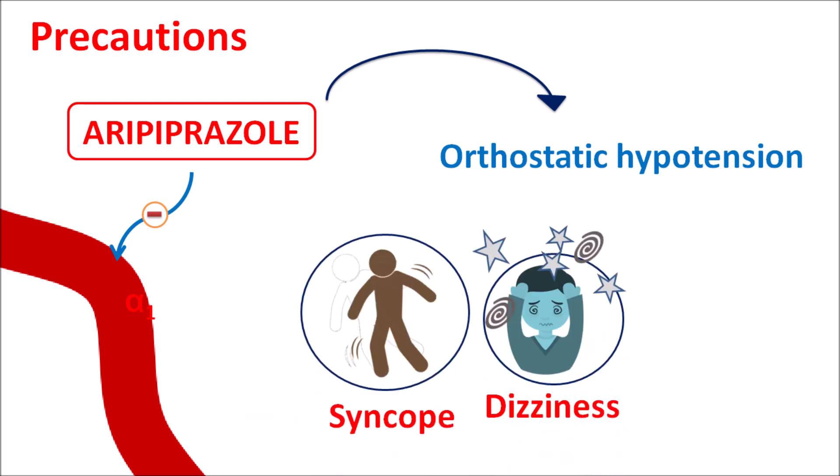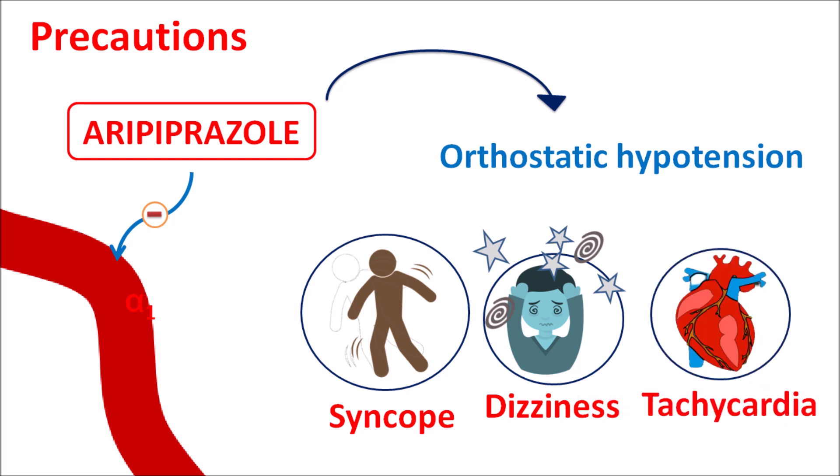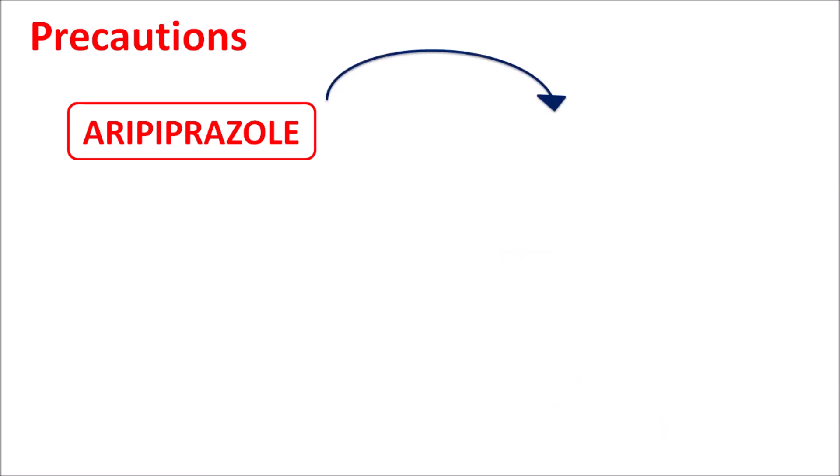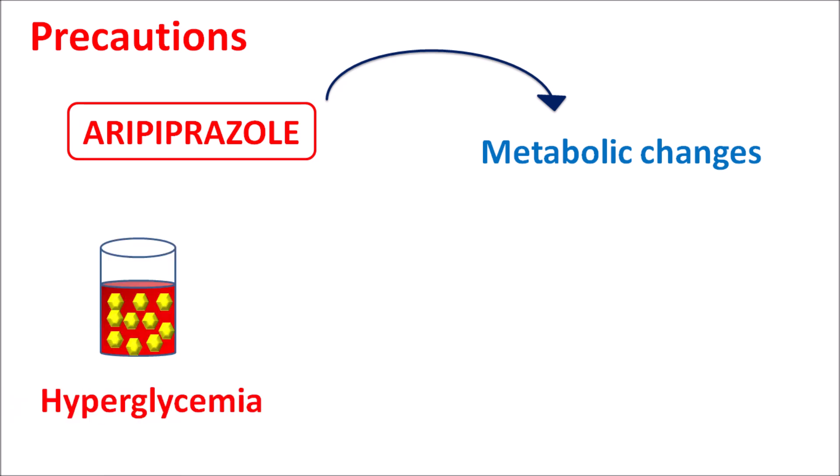Dizziness and even increased heart rate resulting in tachycardia can all be observed because of orthostatic hypotension. So if a patient is already taking any vasodilators, aripiprazole should be carefully given. Similarly, this drug can produce metabolic changes within patients, particularly it can increase glucose levels resulting in hyperglycemia. This is more important in patients with diabetes where glycemic control may fail due to long-term treatment with aripiprazole.